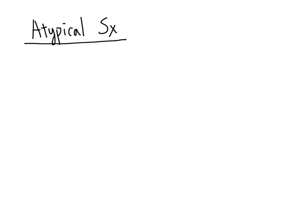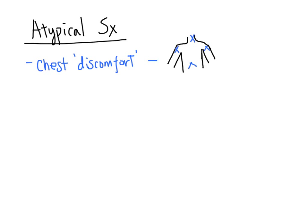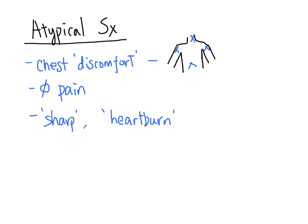However, patients can also have atypical ACS symptoms. In terms of the chest pain description, the patient can have very mild discomfort — it may not even be in the chest at all. It could be isolated in the shoulder, arm, jaw, or epigastric area — really, anywhere but the chest region. They may not have chest discomfort at all and may only have shortness of breath or diaphoresis. The patient might describe the pain as sharp or similar to heartburn. It might even be pleuritic or reproducible on palpation. The pain may not be worse with exertion and may not get better with rest.